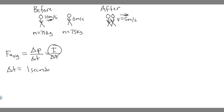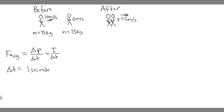If the impulse — which is the change in momentum — divided by 0.1 is greater than 4,500, that means the bones will break. So we need to find out if it's greater than 4,500 or not. F is 4,500 newtons, so we need to solve for the impulse, because we're going to divide it by 0.1 and see if it's greater.